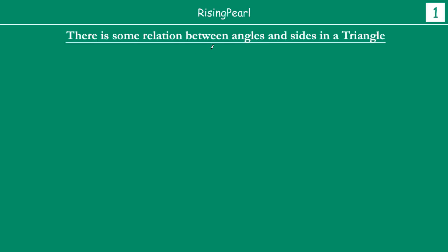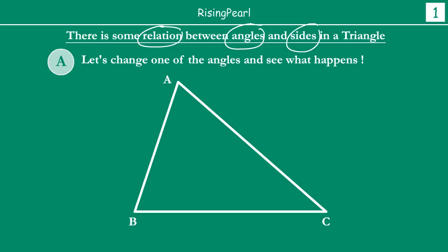We are going to start a conversation by understanding what is the relationship between angles of a triangle and sides of a triangle. The way we are going to understand this is that first we are going to change one of the angles of a triangle and see what it does to the other angles and sides.